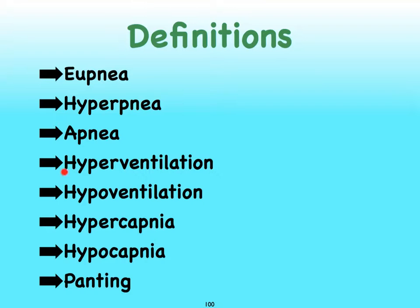Hyperpnea is not exactly the same as hyperventilation. Hyperventilation really refers to the fact that we're breathing so fast that we're literally blowing off too much carbon dioxide. It is our carbon dioxide levels that drive our breathing, not oxygen levels. Carbon dioxide plays a very important role in our breathing, and when we hyperventilate, we are literally getting rid of too much carbon dioxide, which has consequences. So there's a slight difference between hyperpnea and hyperventilation — you can breathe faster and deeper without losing too much carbon dioxide; that would be hyperpnea.